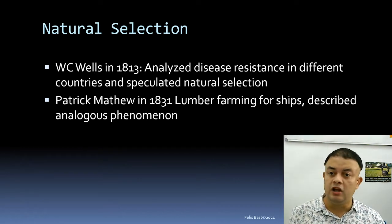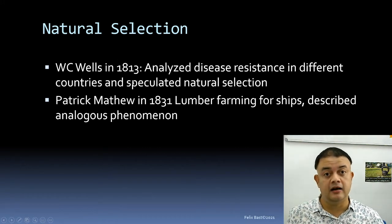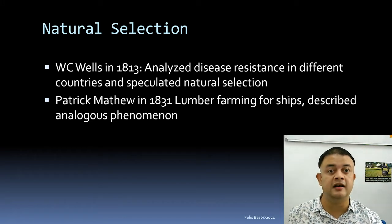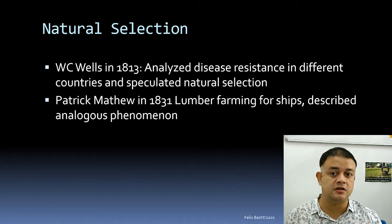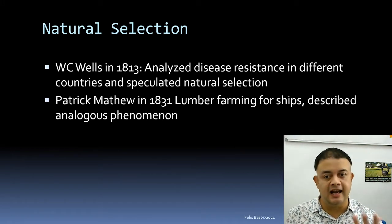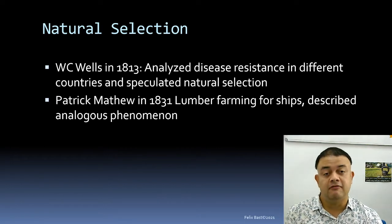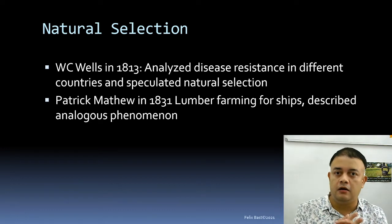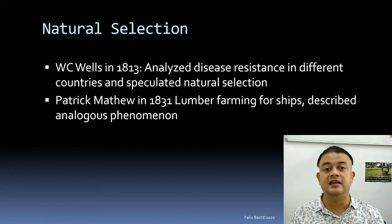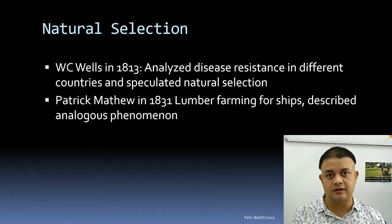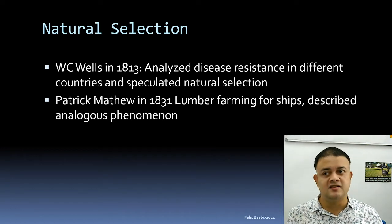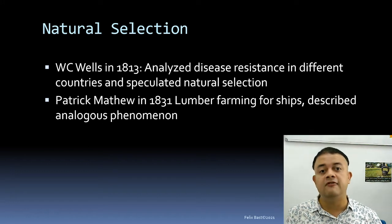Natural selection, though frequently attributed to Darwin and Wallace, actually predates both. W.C. Wells in 1813 analyzed disease resistance in various countries and speculated about the same phenomenon without using the term. Patrick Matthew, a plant breeder farming timber for shipbuilding, also observed a similar phenomenon through artificial selection. The idea keeps being refined — that is how science progresses.